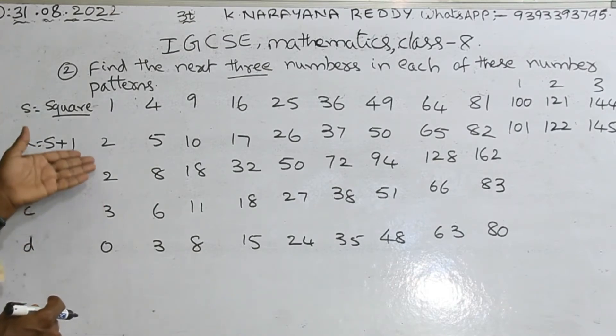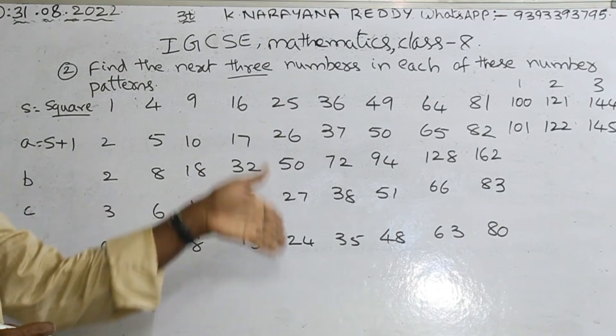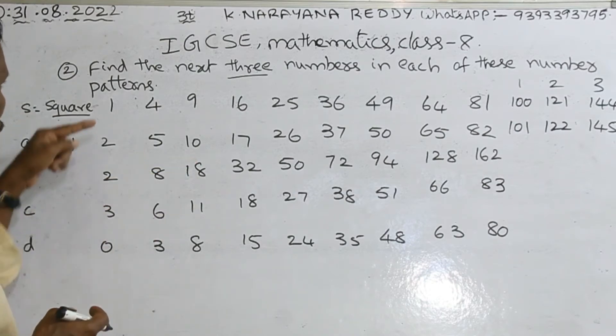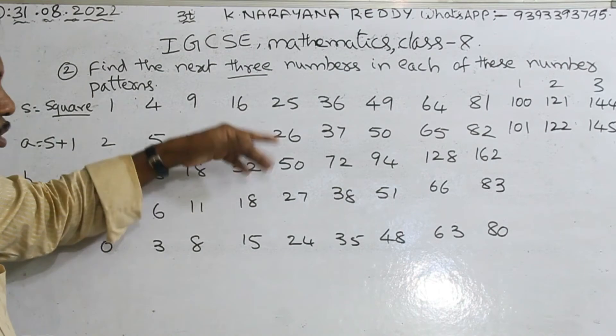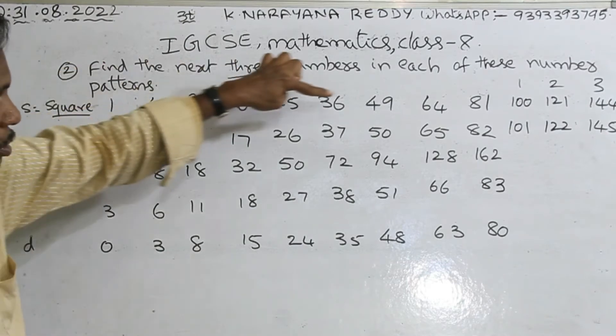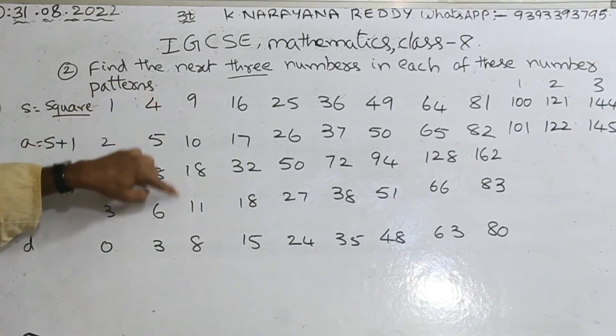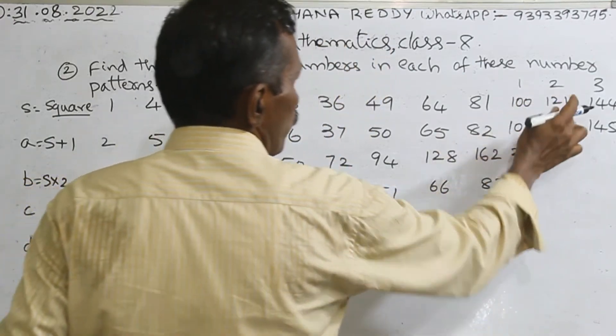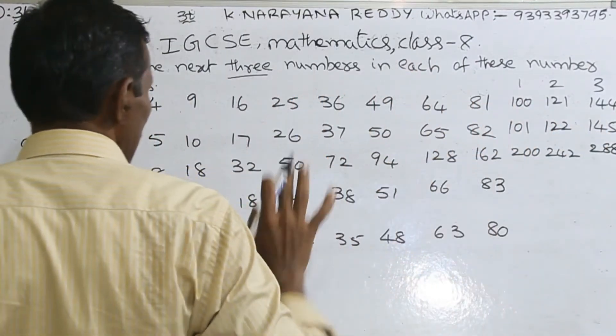Now goes to third row. This is called column. You know that. Horizontal line is called row, vertical line is called column. Now see here. 2, 8, 18. What happened? 1 into 2 equals 2. 4 into 2 equals 8. 9 into 2 equals 18. 16 into 2 equals 32. Like that. So 100 into 2 equals 200. 121 into 2 equals 242. 144 into 2 equals 288. That's it. Comes to third row.